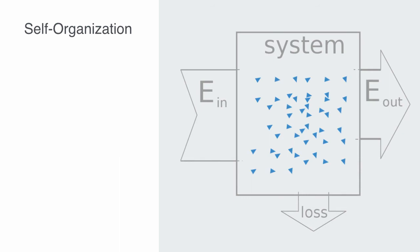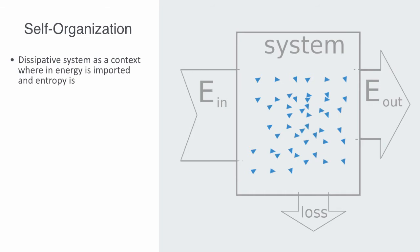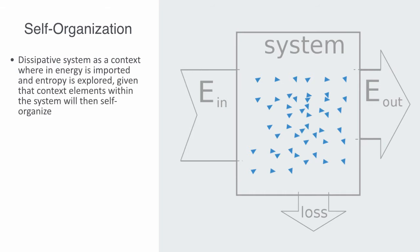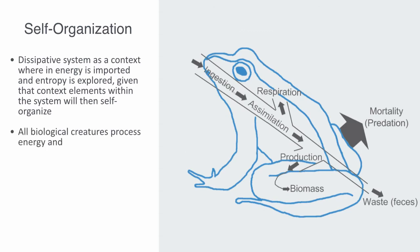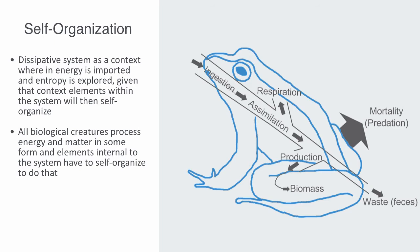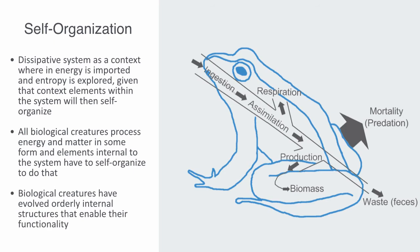It is this feature of dissipative systems like ecologies that creates the conditions for self-organization, where we can think of a dissipative system as a context where energy is imported and entropy is exported. Given that context, elements within the system will self-organize to process whatever resource is flowing through the system. This is part of the essence of biological creatures. Not only are biological systems dissipative, but also they perform some internal function. All biological creatures process energy and matter in some form, and elements internal to the system have to self-organize to do that. Biological creatures have evolved orderly internal structures that enable their functionality, and this internal functionality has no equivalent within inert physical systems.